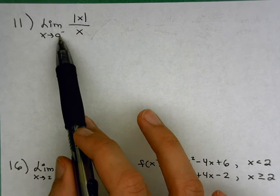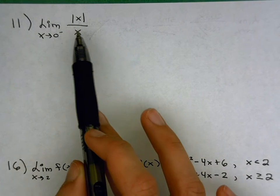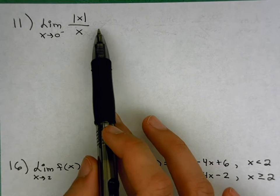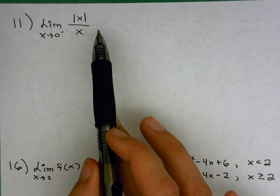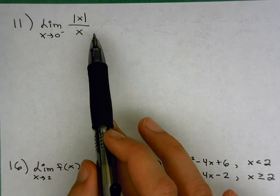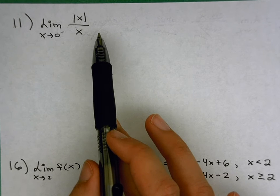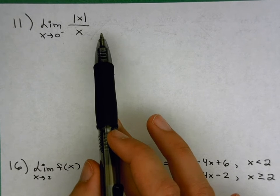In this particular case, when we plug in 0, we get 0 over 0, which means that we need to figure out something more. Can we factor? Can we rationalize? Can we get rid of an extra denominator? Can we distribute and simplify in some way?